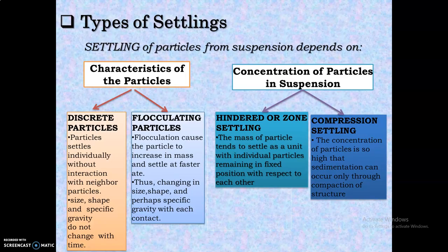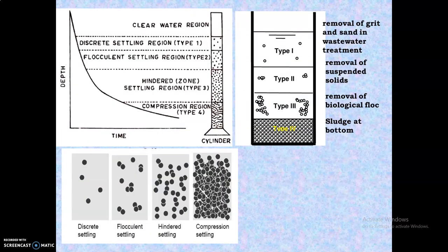The fourth type is compression settling, where the concentration of particles is so high that sedimentation can occur only through the compaction of the structure. Because of the high concentration of particles, they compact each other in such a way that they need some external pressure to settle down. This is called compression settling.